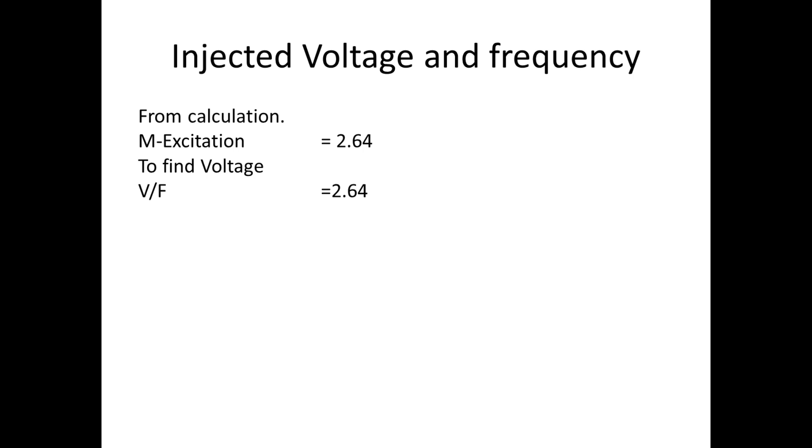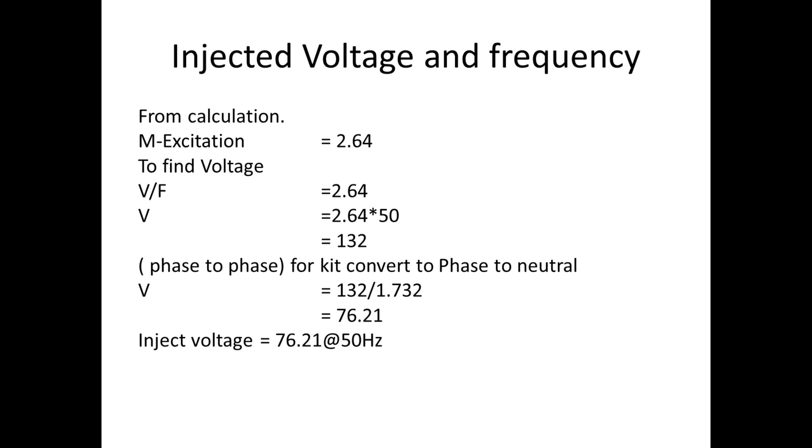To find V, we have to take f to the other side, so it will go for multiplication with 2.64, and we are going to keep f fixed, that is 50 hertz. So we got V is equal to 2.64 × 50. So V we got is 132 voltage. The value which we got is phase to phase.